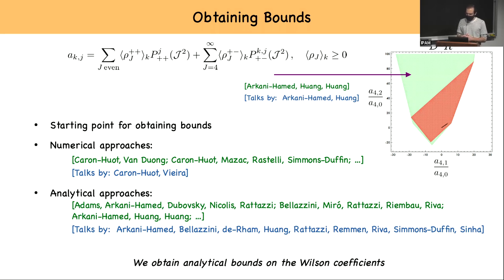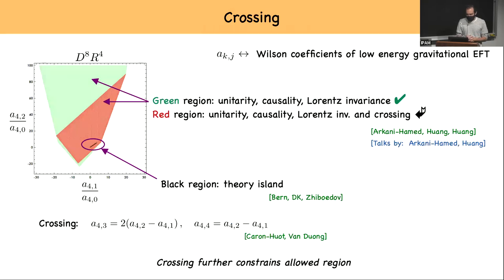There are both numerical approaches and analytical approaches to this problem, but today we're going to be using the EFThedron approach of Arkani-Hamed et al., which beautifully gives you an analytical solution to this problem. And with what I've laid out so far, it gives you this green region that we see on the plot. There is one more ingredient that goes into this analysis, and that is low energy crossing.